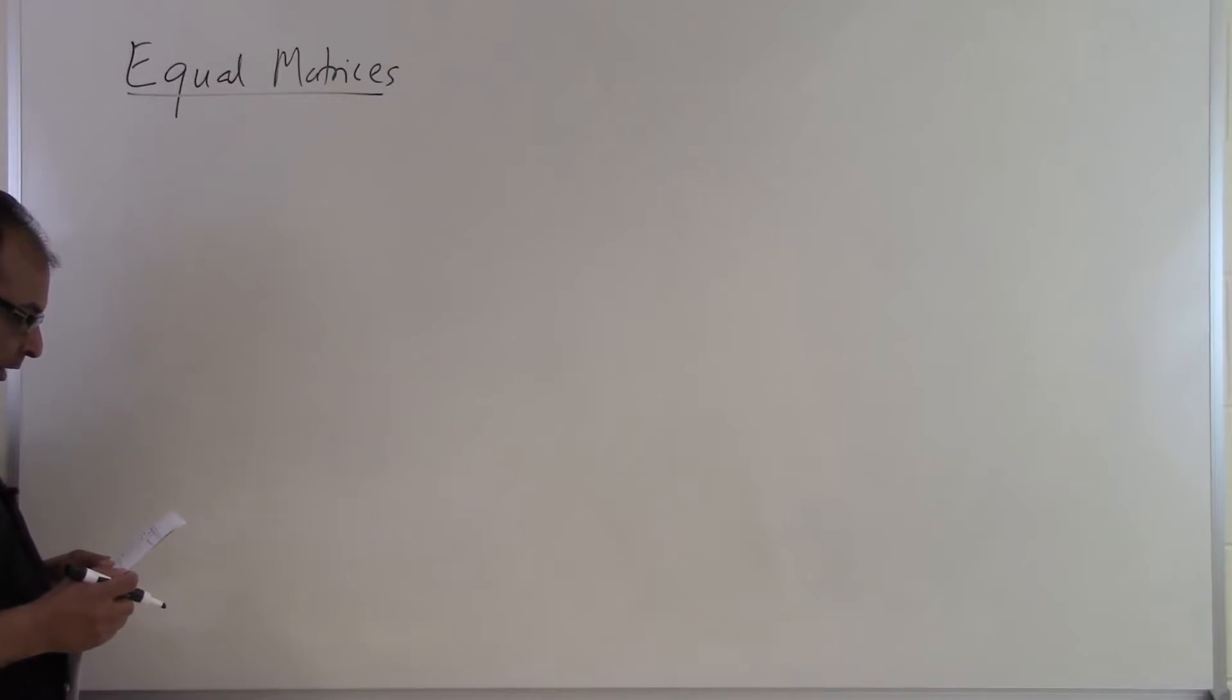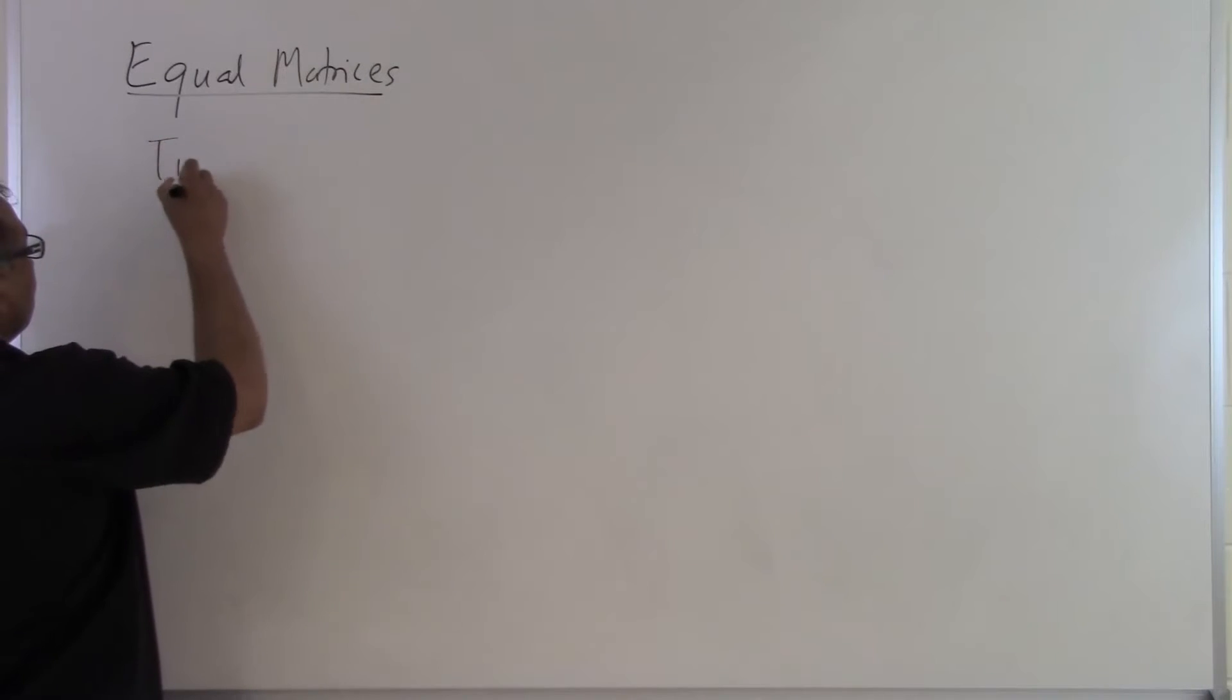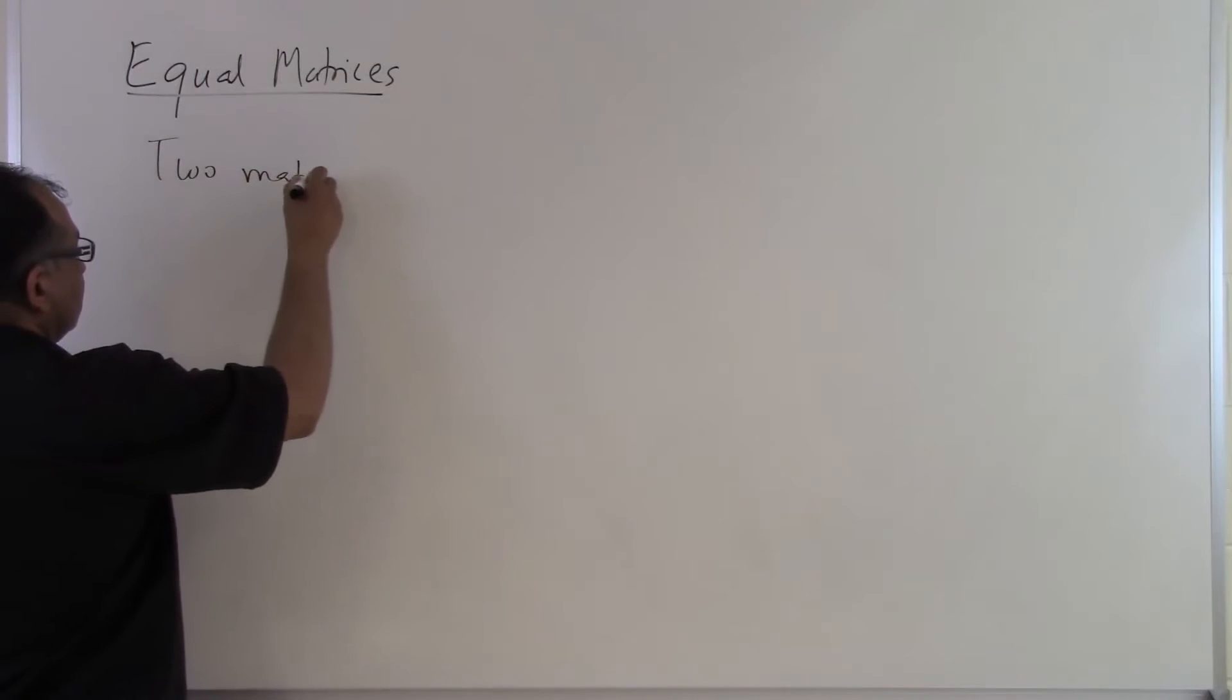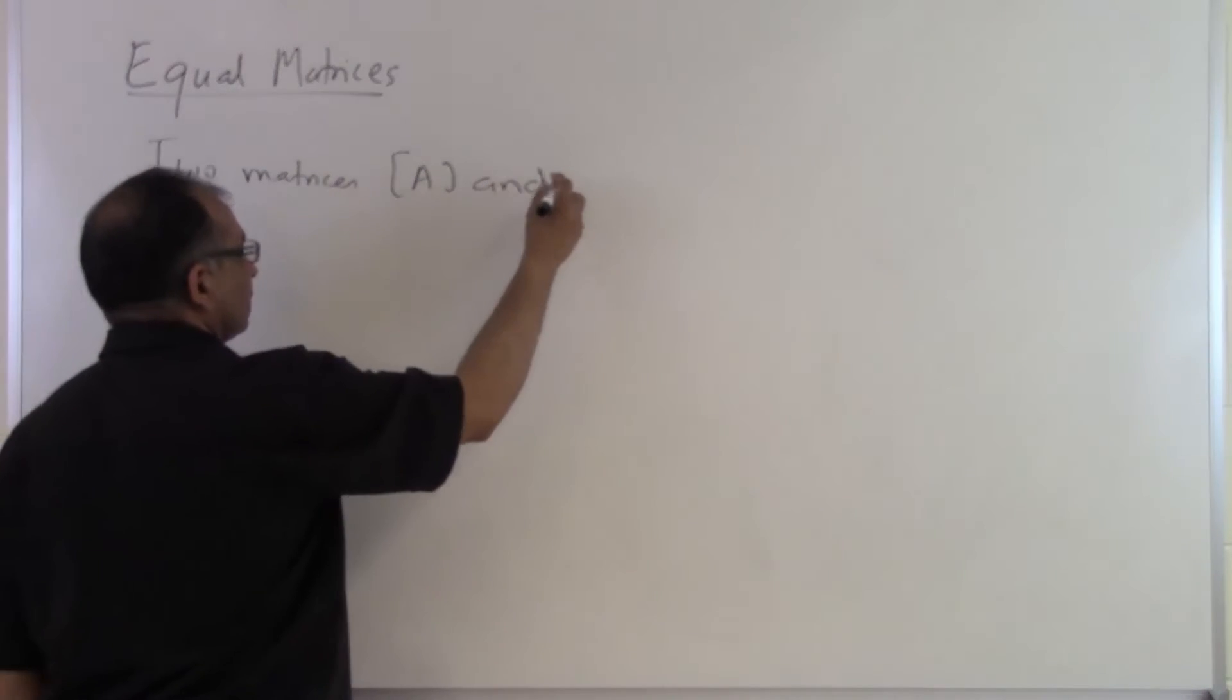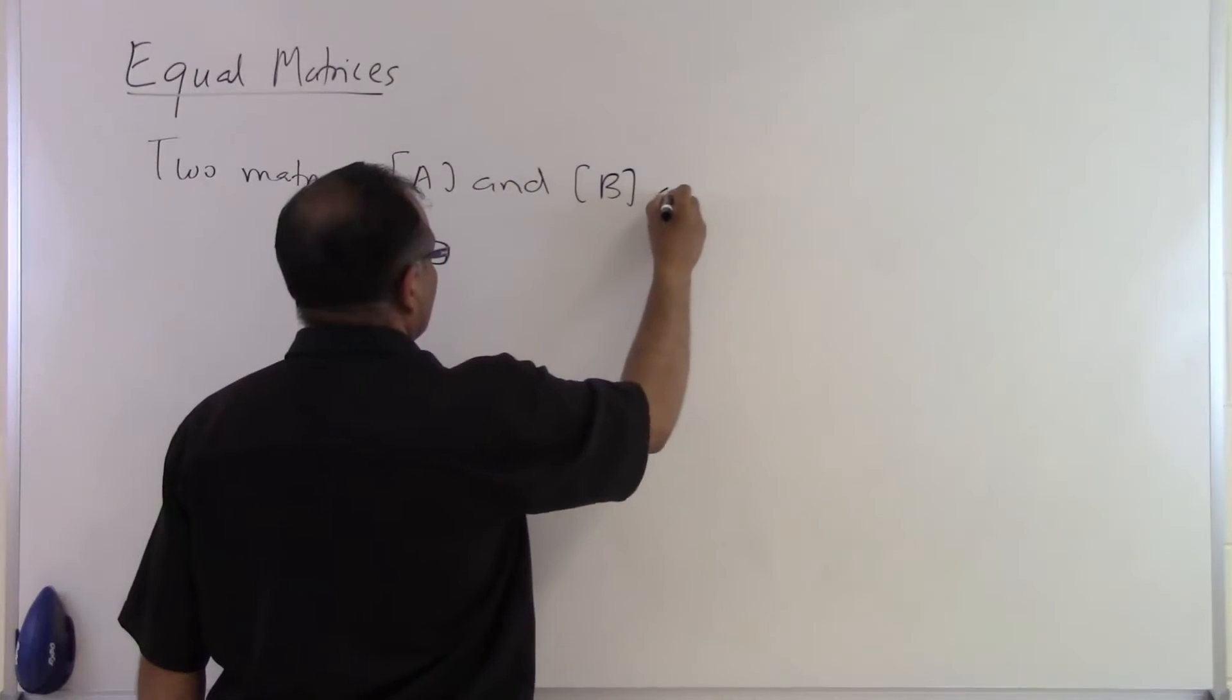So let's talk about when two matrices are considered to be equal. Two matrices are considered to be equal. So two matrices A and B are equal.